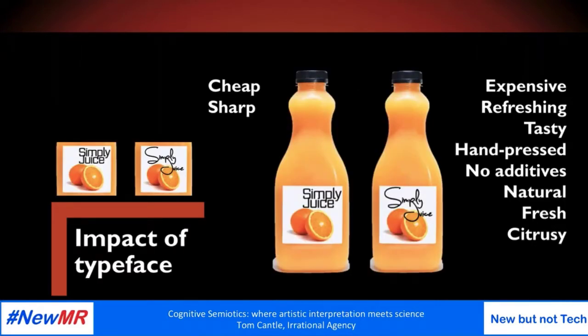We continue to a second experiment, looking at small differences in logo design and how these could alter perceptions. We changed one thing over three iterations of the label on an orange juice bottle. In this first experiment, we changed the typeface — there's a square one on the left and a handwritten one on the right. People interpreted the handwriting to connote far more than perhaps you might think. The more square typeface was seen as quite cheap and sharp, whereas the rounded handwritten one tends to suggest a lot of positive things like expensive, hand pressed, and natural.